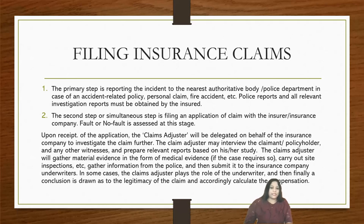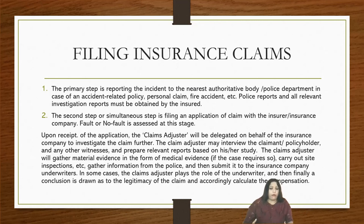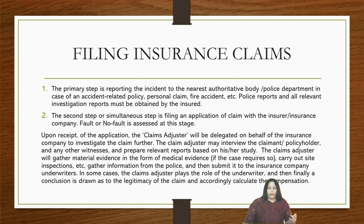Upon receipt of the application, a claims adjuster will be delegated by the insurance company to investigate the claim further. The claims adjuster may interview the claimant, the policyholder, and any other witnesses and prepare relevant reports based on his or her study. The claims adjuster will basically gather material evidence — for example, medical evidence if the case requires, or carry out inspections, gather information from the police or other investigation officers, collect evidence, and then submit his or her report to the insurance company. Depending on jurisdiction and the type of company, they may have a distinct claims adjuster and a distinct underwriter. Sometimes the task of a claims adjuster is performed by the underwriter themselves.